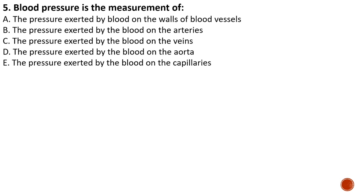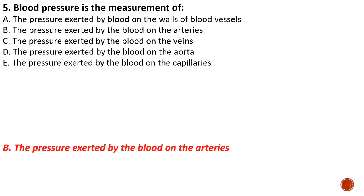Question number five: blood pressure is the measurement of — the pressure exerted on the walls of blood vessels. For this question we take the answer as the pressure exerted by blood on the arteries, because blood pressure by definition is the pressure exerted by blood on the blood vessels, but the question refers to its measurement which is usually measured in the arteries, so we take B as the answer.